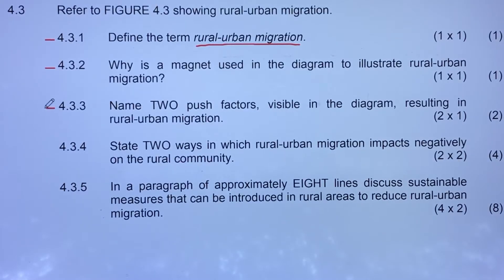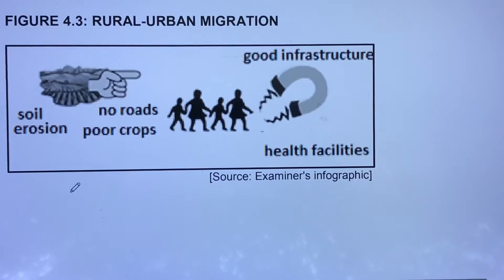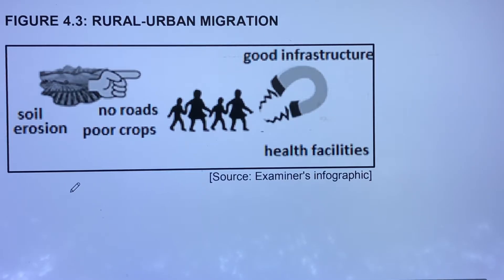Question 4.3.3 asks us to name two push factors visible in the diagram. Before answering, note that pull factors are what attract people to move from rural to urban areas, while push factors are conditions that make it a necessity for people to leave rural areas — they have no choice but to move.